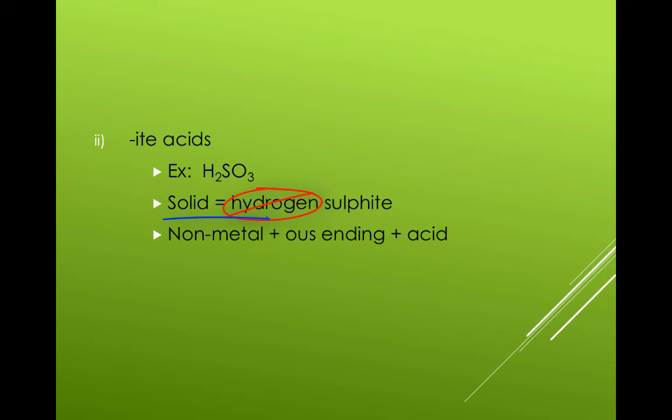The final type of acid is the polyatomic acids that end in ite. For example, H2SO3 or hydrogen sulfite. When mixed with water, it becomes an acid and the naming rule follows this. Skip the hydro again and simply use the nonmetal in the polyatomic, but this time change the ending to ous, then the word acid. This is sulfurous acid.